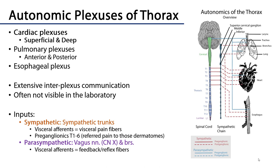Autonomic plexuses are aggregations of postganglionic sympathetic fibers with preganglionic parasympathetic fibers. In the thorax there are three major aggregations of such plexuses: the cardiac plexuses, which exist as both superficial and deep plexuses; the pulmonary plexuses, which exist as both anterior and posterior plexuses; and the esophageal plexus. There is extensive communication amongst the fibers of these plexuses, especially between the cardiac and pulmonary plexuses.